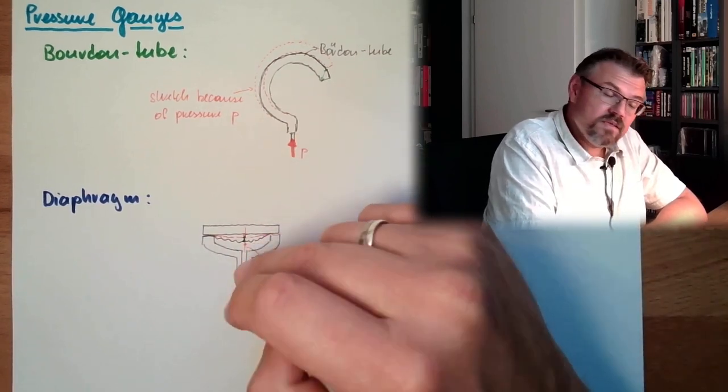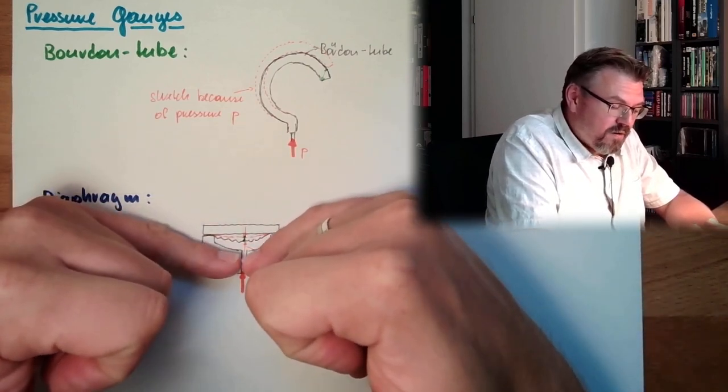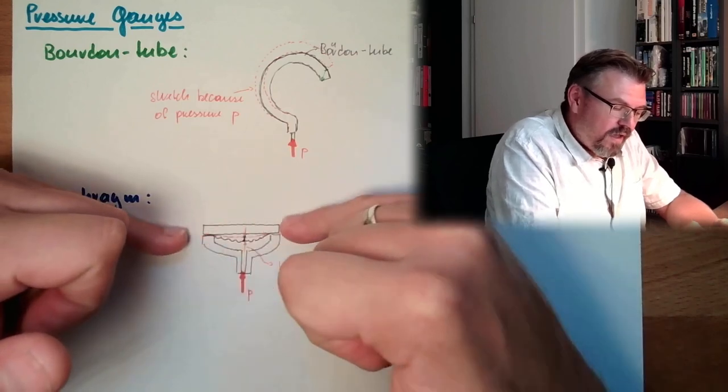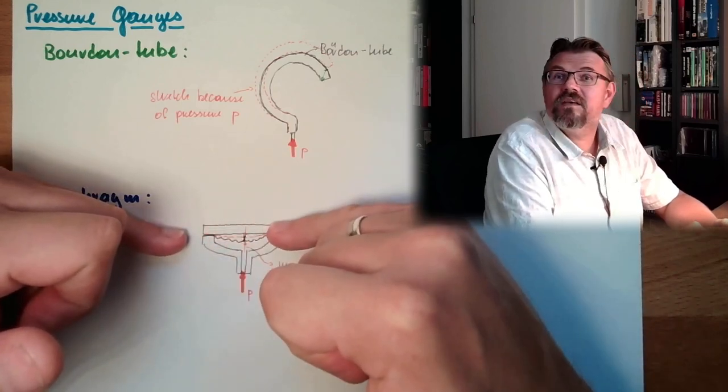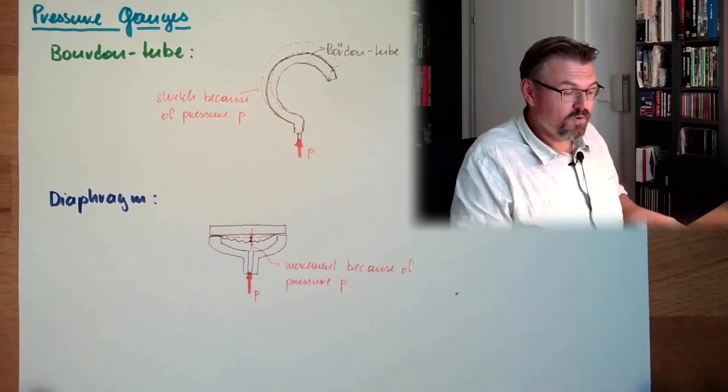However, I can make this, because what could happen? If there is a lot of pressure, then the diaphragm will have this as support. So it will not get destroyed. This, you can construct as overload safe.